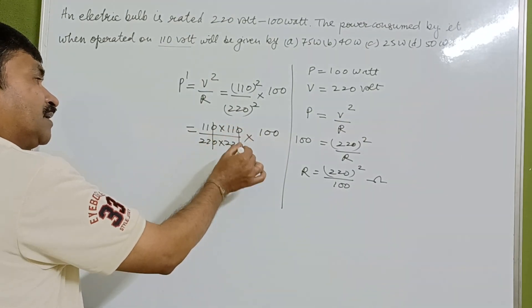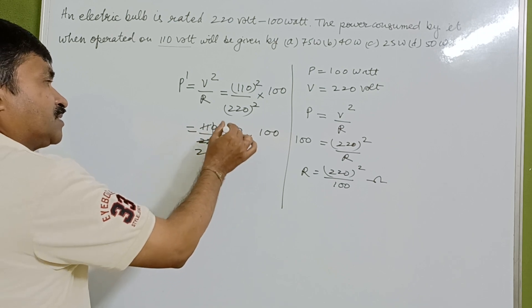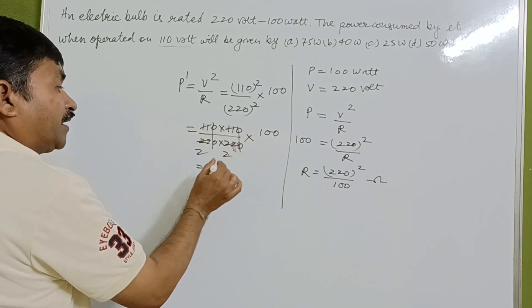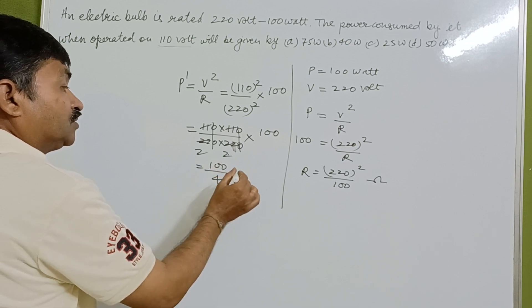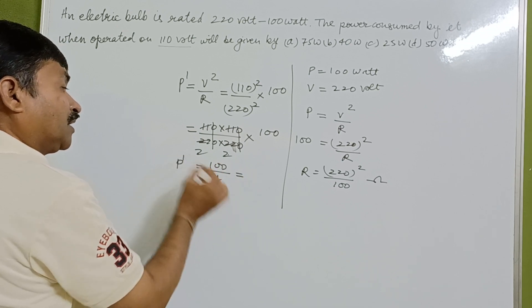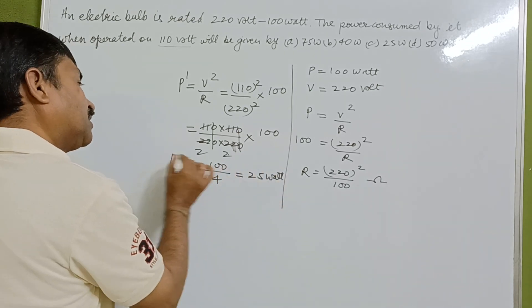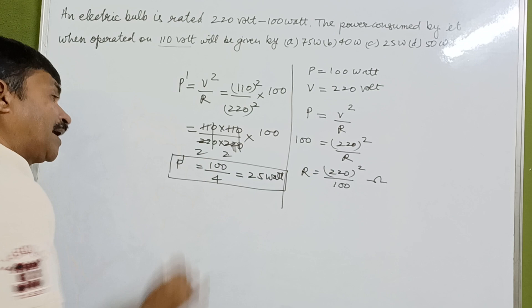After simplification, we cancel 2 times 2 times, getting 100 upon 4. The power consumption is 25 watt when the electric supply is reduced.